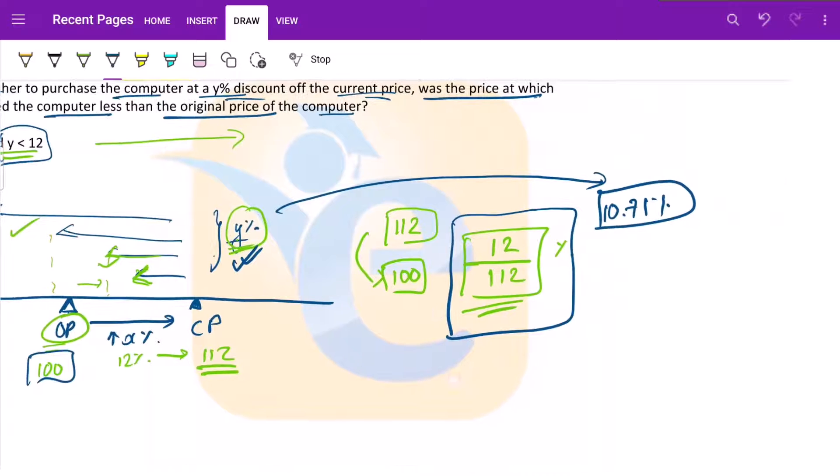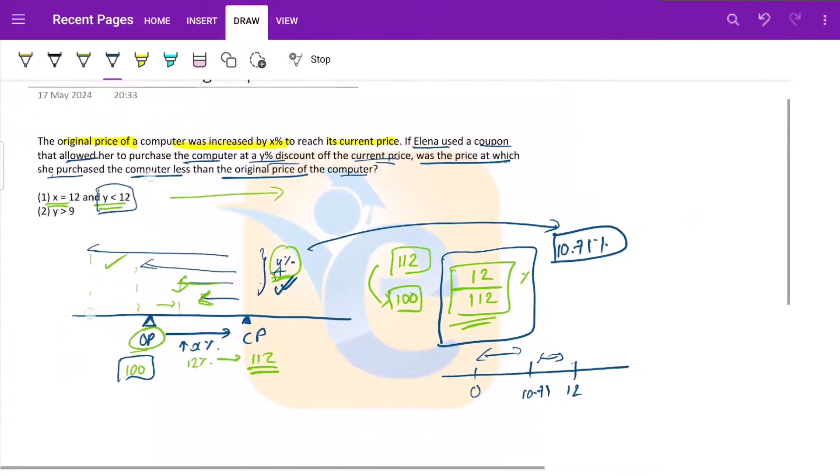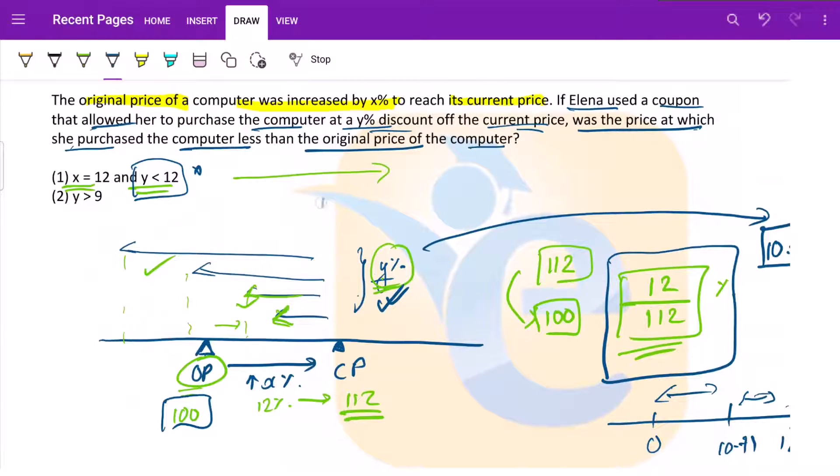But what do we have about Y? Y is less than 12. So Y is between 0, 12 and 10.71. Y is less than 12. So it can be here also, it can be here also. So we do not have a definite answer. This does not help us. So A and D both are out of the window.